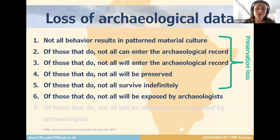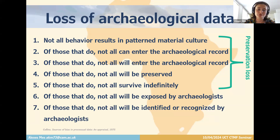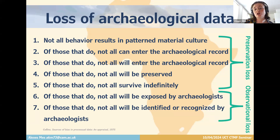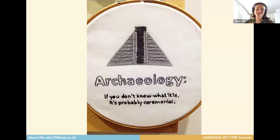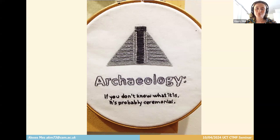Continuing with the biases causing loss of archaeological data: at number six, not all sites will be exposed by archaeologists, and at number seven, not all will be identified or recognized by archaeologists — these last two lead to observational loss. This comes to my favorite joke in archaeology, hanging on a wall in our department: 'if you don't know what it is, it's probably ceremonial.' Besides all the sites we lose, when we do have a site we might not be identifying it correctly — we have a tendency to ascribe things ritualistic or ceremonial value when in reality it might not be.